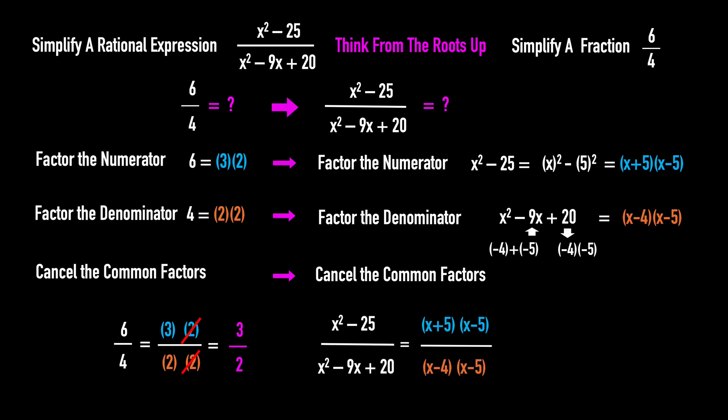Now we cancel the common factors. (x - 5) appears in both the numerator and denominator. Let's cancel them. The remaining terms are (x + 5) over (x - 4). We're done.